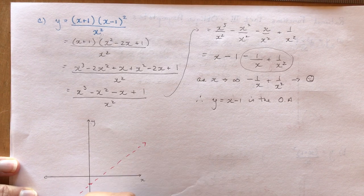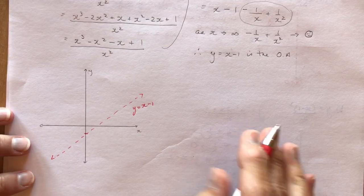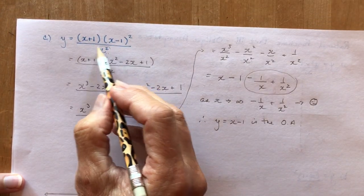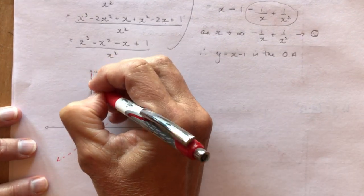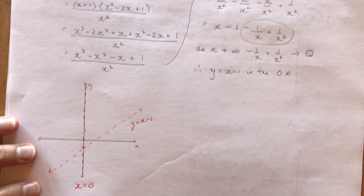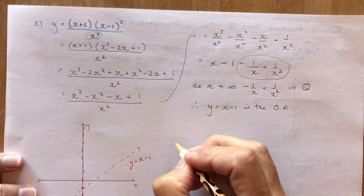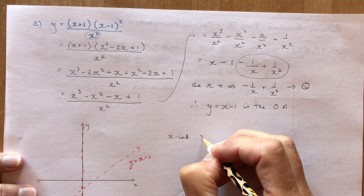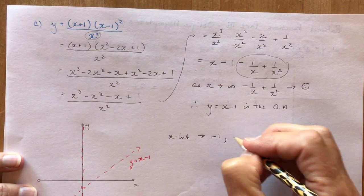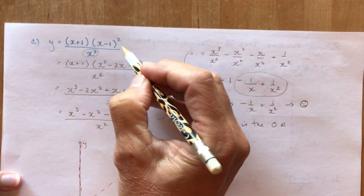Draw the line y = x - 1 on the graph. The vertical asymptote is x = 0. For x-intercepts: set the numerator equal to zero. x = -1 is a single root (degree 1) and x = 1 is a double root (degree 2). A double root means you go down, touch the x-axis, and go back up.